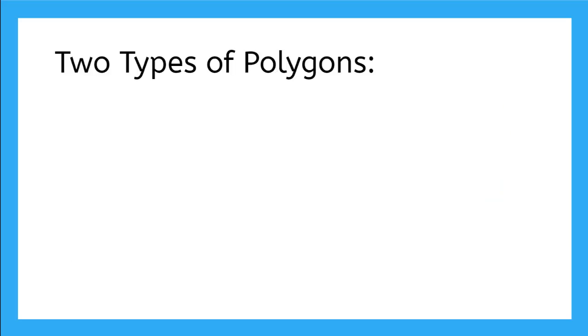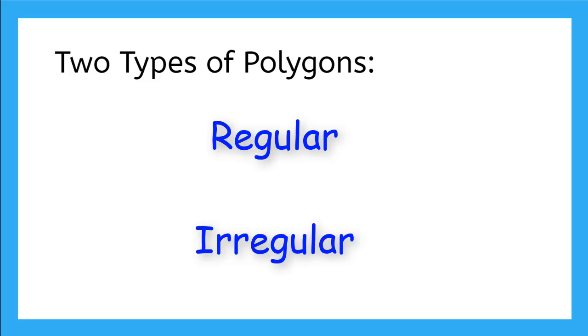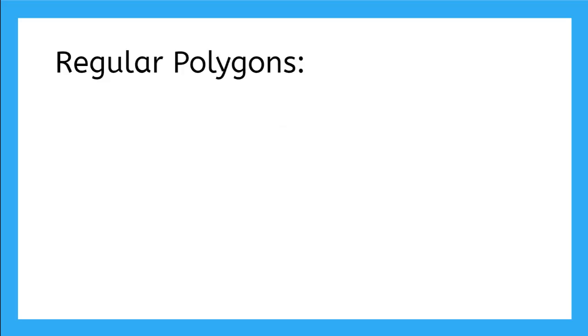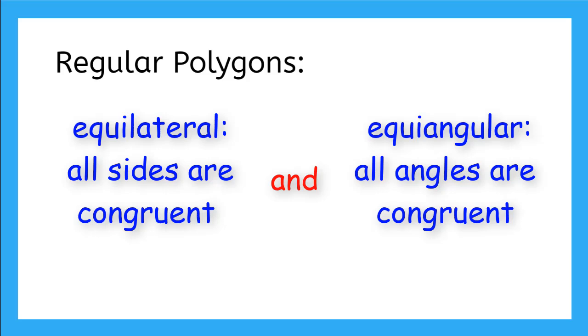There are two types of polygons, regular and irregular. Regular polygons are equilateral and equiangular. Equilateral means that all of the sides are congruent. They are the same shape and size. And equiangular means all the angles are congruent. They are all the same measure of degrees.